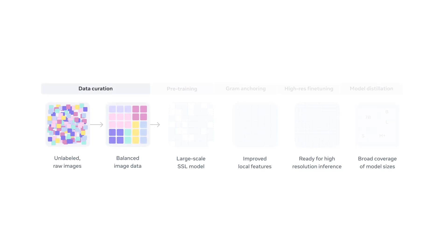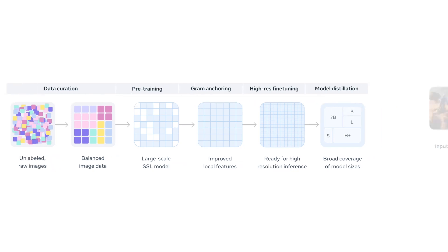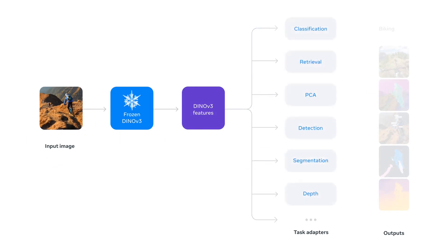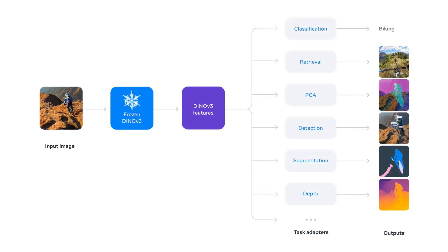What is DINOv3? DINOv3 is a very powerful backbone model where they used millions and millions of images to train just this pretty simple task of self-supervised learning. For many tasks this backbone works out of the box — you can just take features, train a linear classifier and it will work. They mentioned that it works great not only for classification but also for segmentation, detection, depth estimation and so on.